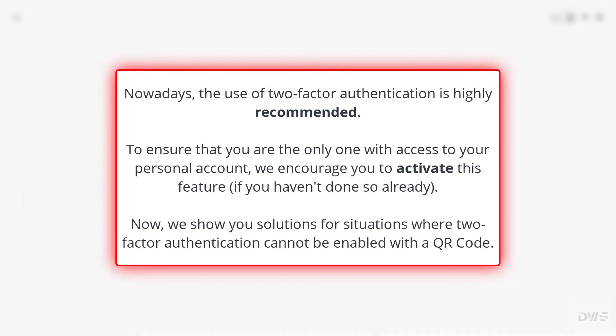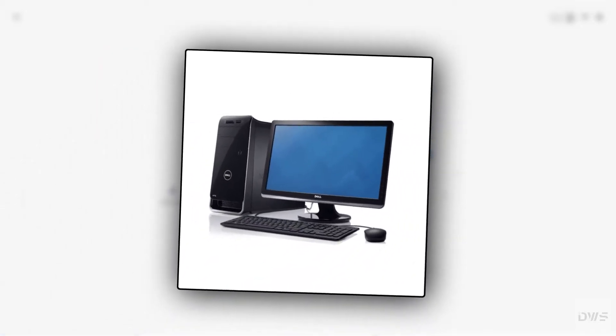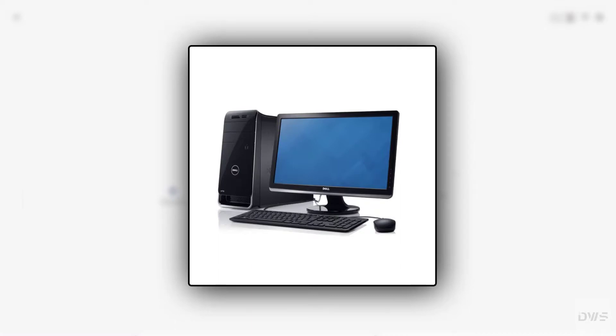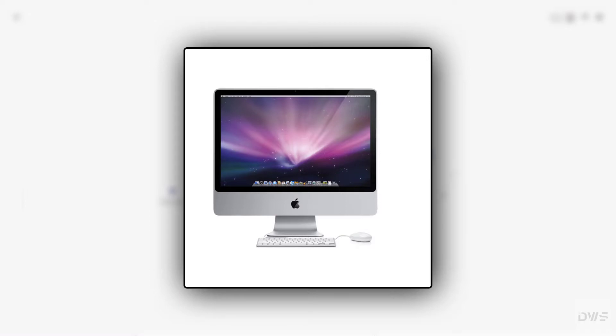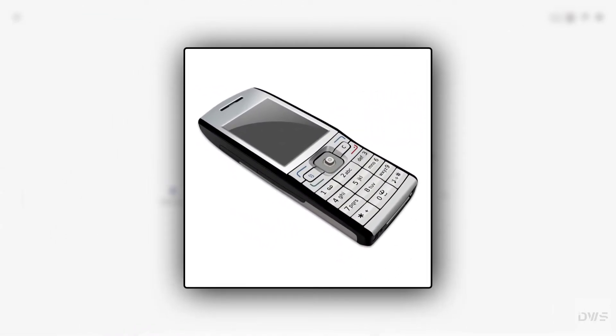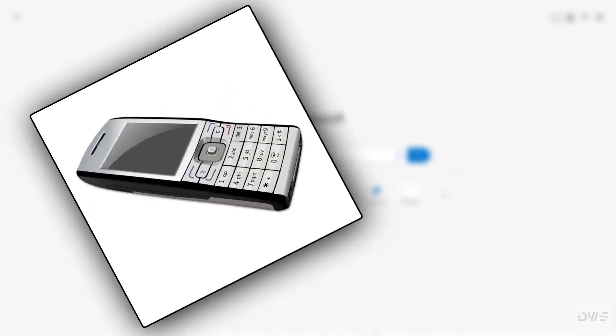Now, we show you solutions for situations where two-factor authentication cannot be enabled with a QR code. Such reasons are for example: you only have a desktop computer without a mobile phone, you only have a notebook without a mobile phone, you only have a Mac computer without a mobile phone, or you have an old mobile phone without a camera, or you only have one mobile device on which you use our service.